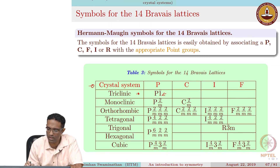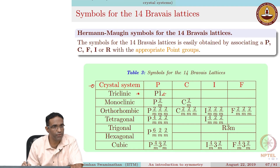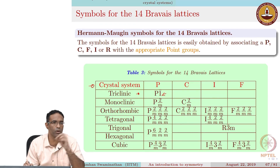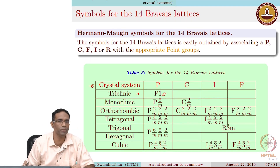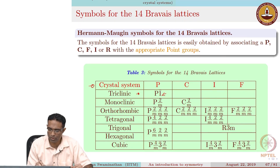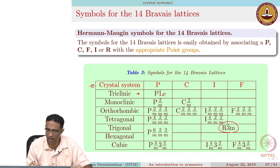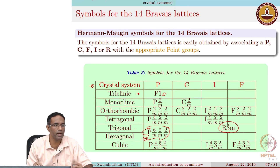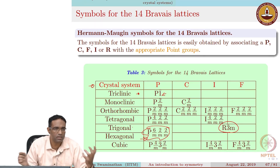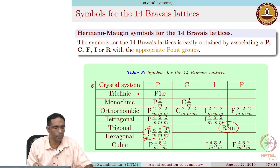For orthorhombic, you can have P, C, I, and F — where P stands for primitive, C is centered, I is body-centered, and F is face-centered. For tetragonal, you can have only the primitive and body-centered versions, as a face-centered version turns out to be equivalent to the body-centered version. For trigonal, you have R 3-bar M, which is written this way because you can use the hexagonal unit cell to create the trigonal lattice as well, as we just discussed.